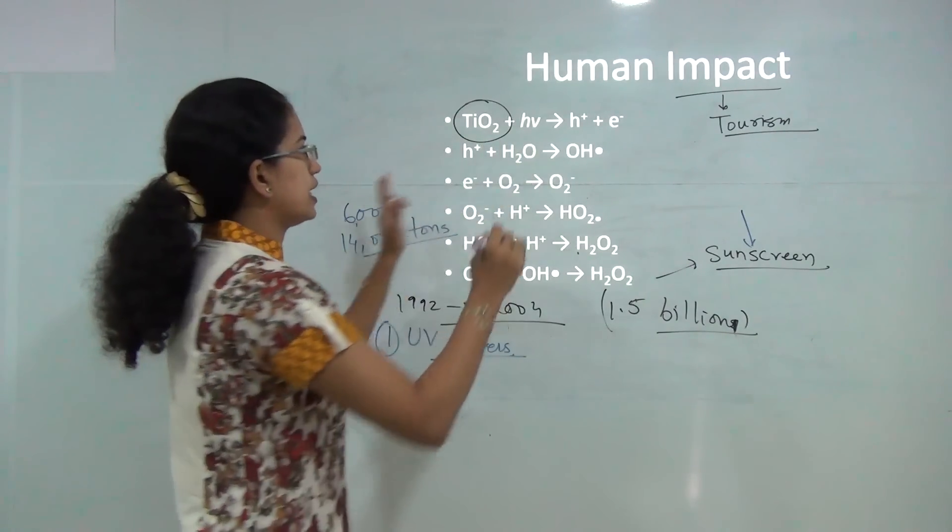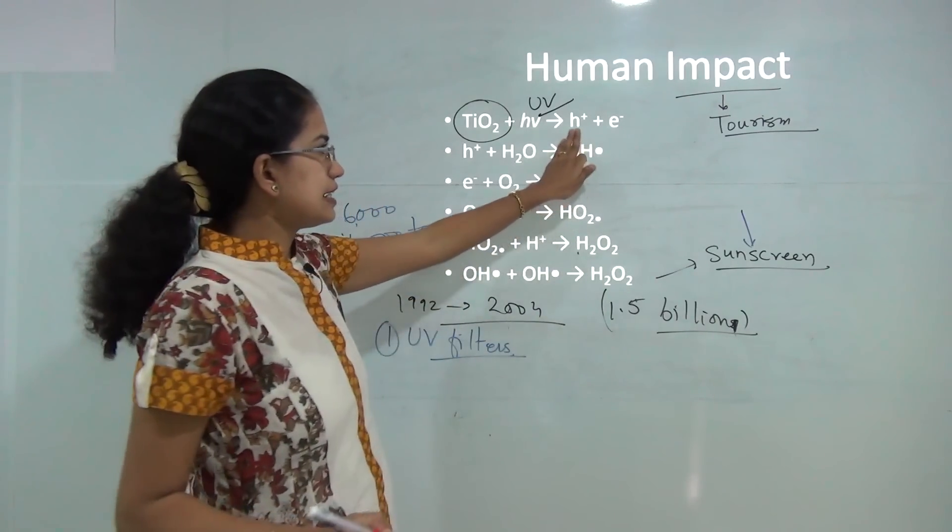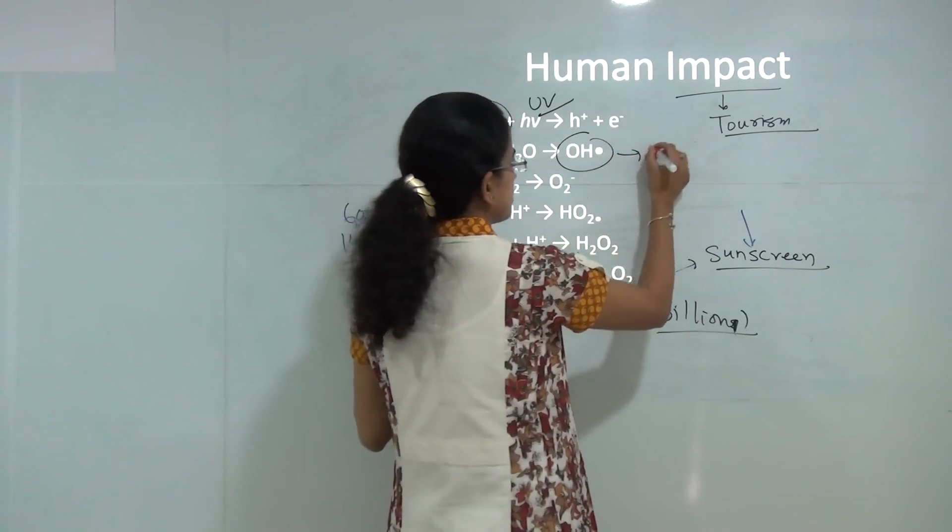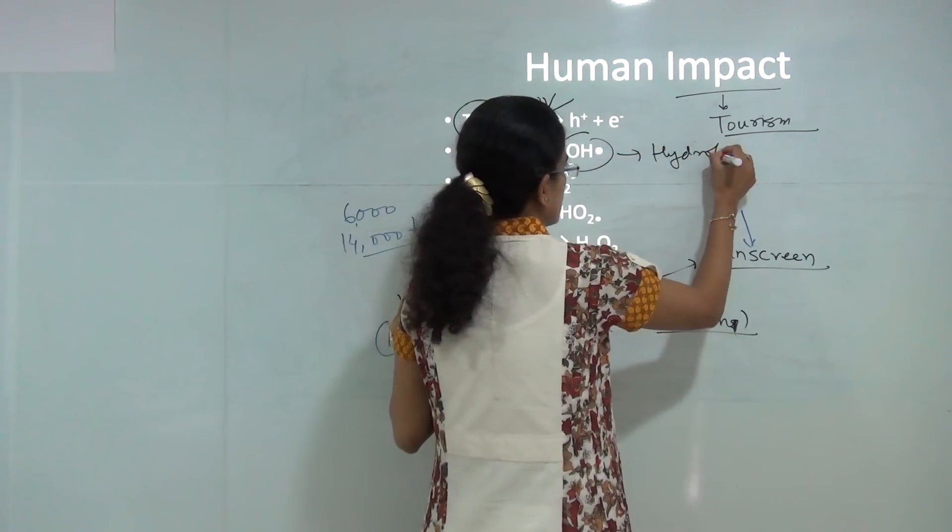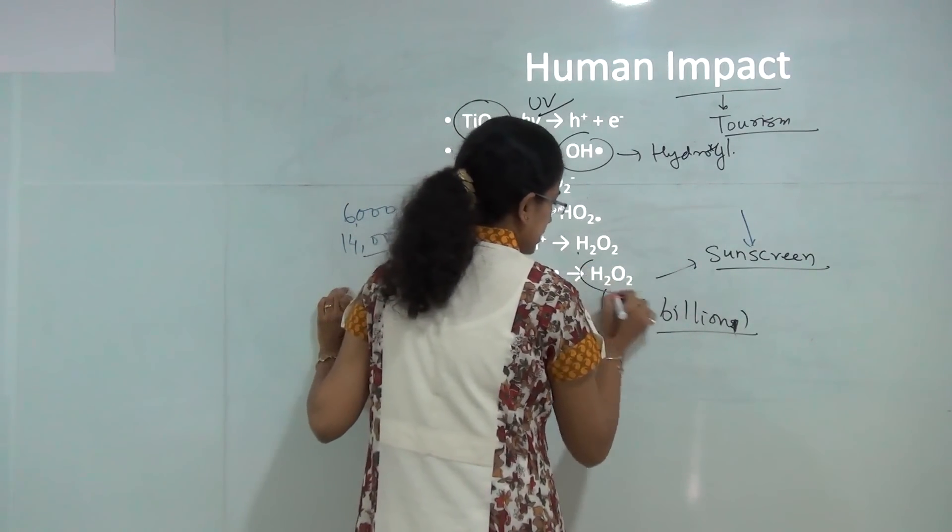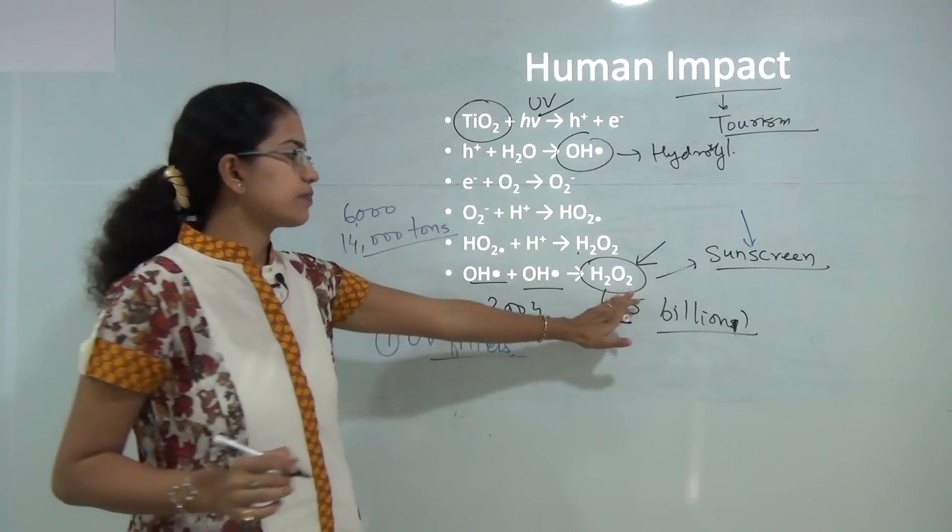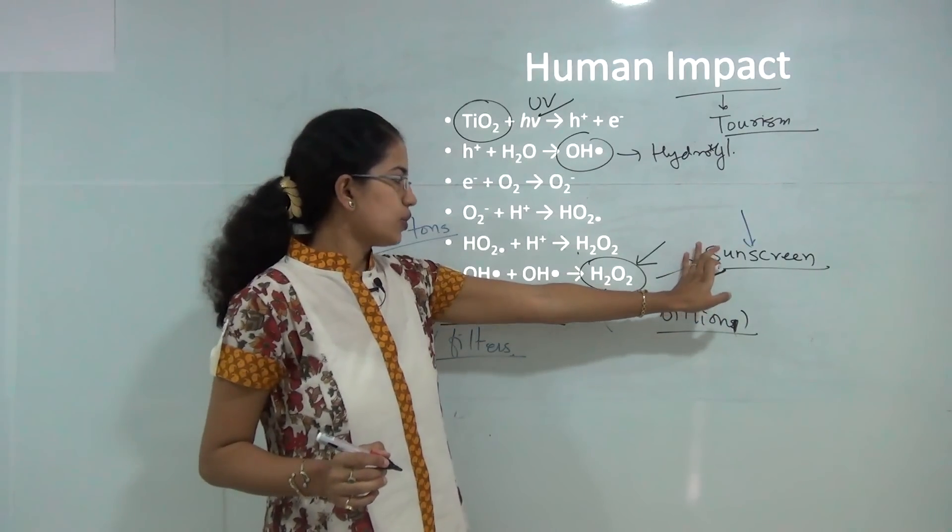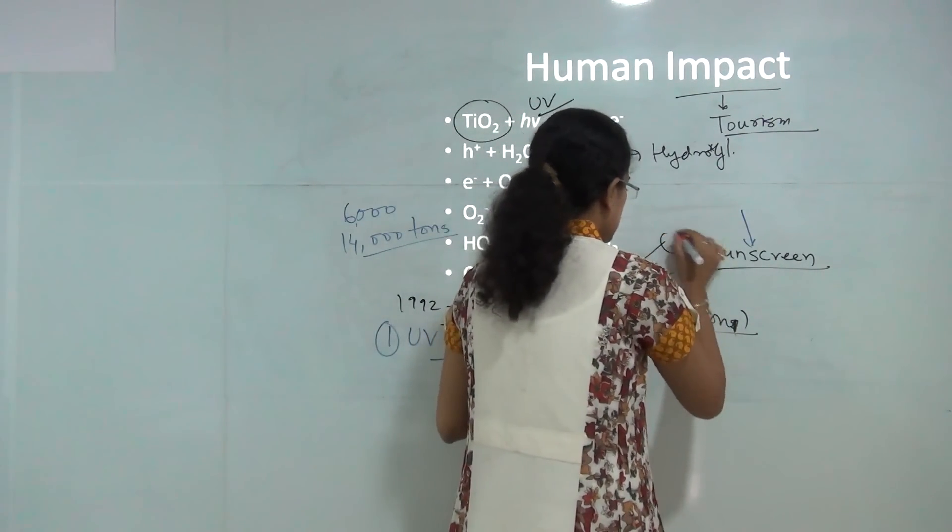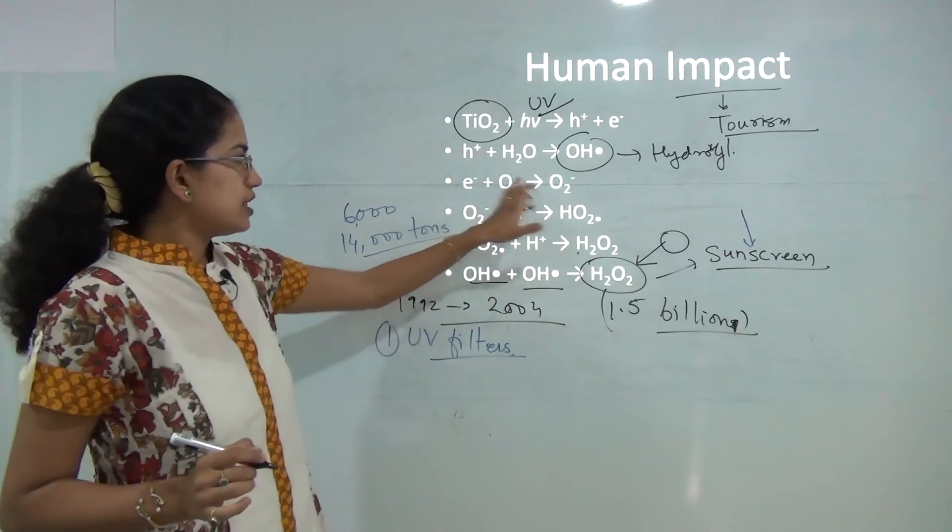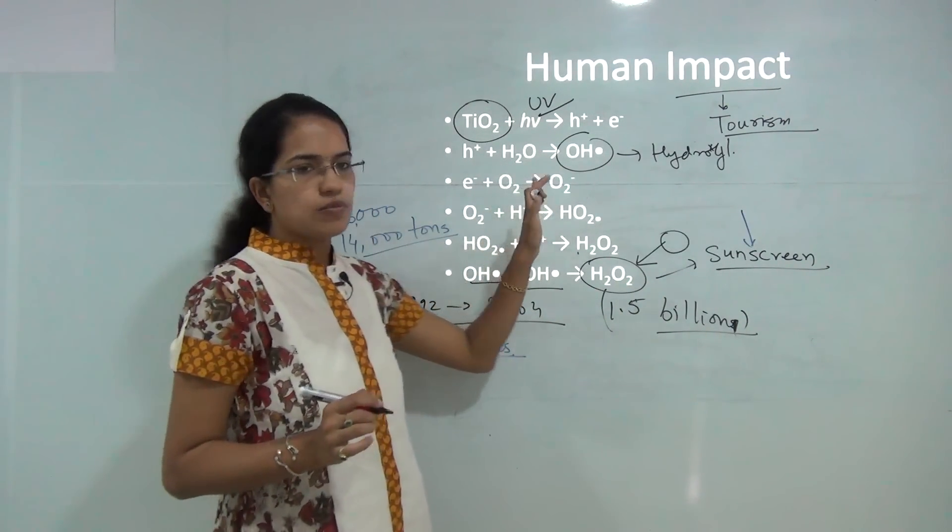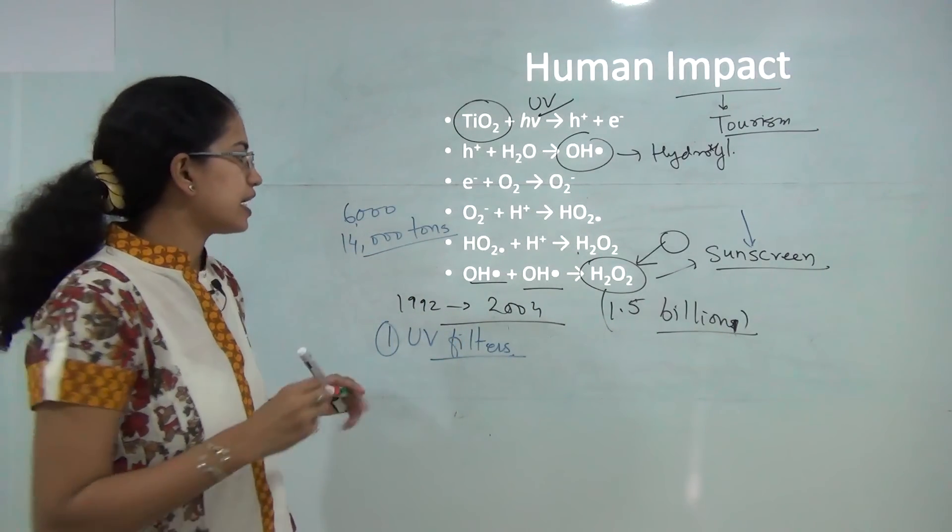This titanium oxide reacts with the ultraviolet ray and releases H ion and electron. This converts it into the hydroxyl ion and this hydroxyl ion undergoes radical polymerization and converts into hydrogen peroxide which ultimately harms the coral reef.